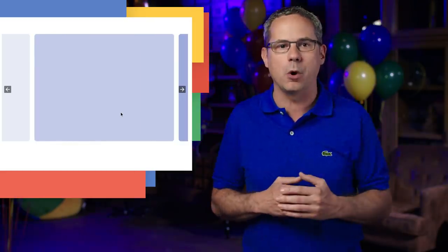CSS scroll snap allows you to create smooth, slick scrolling experiences by declaring scroll snap positions that tell the browser where to stop after each scrolling operation. This is super helpful for image carousels or paginated sections where you want the user to scroll to a specific point.